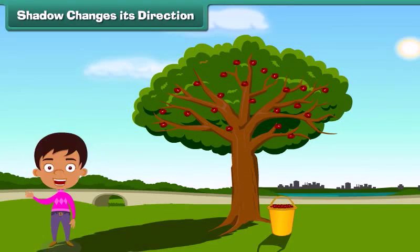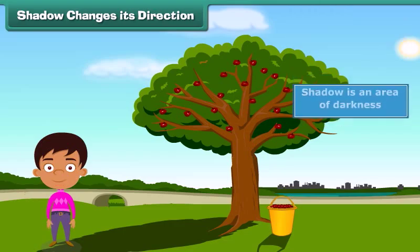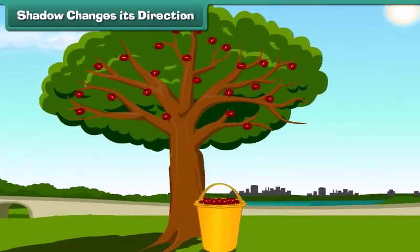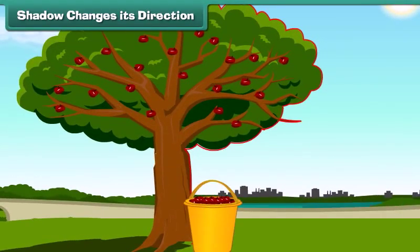Hi, friends. At first, let's discuss what a shadow is. A shadow is an area of darkness which is formed when the light is blocked by an object.